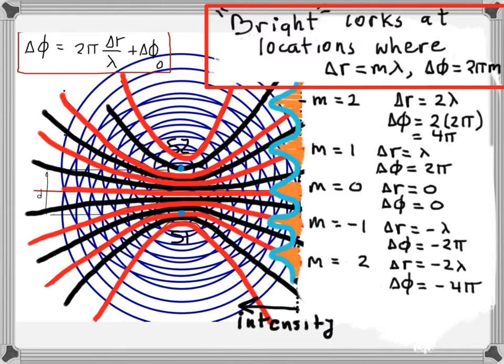In the language of this chapter on light, intensity corresponds to brightness. The bright locations on the line are where ΔR equals a multiple of λ, which is the same as saying the phase difference equals 2π·m. These are the constructive interference locations for the interfering waves.